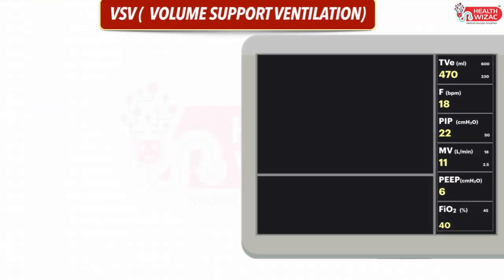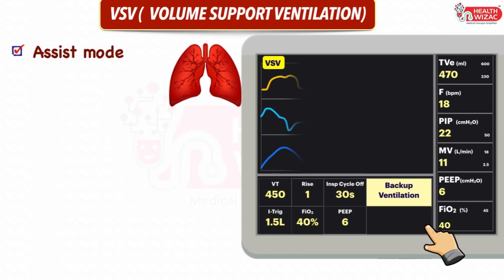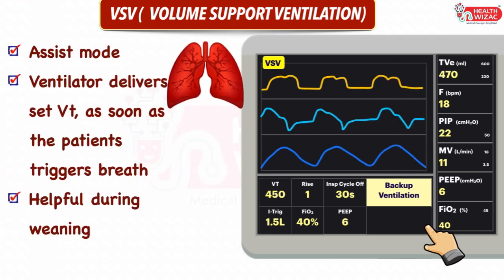Next is volume support ventilation. In this mode we have to set tidal volume, rise time, inspiratory trigger, FiO2, PEEP, inspiratory cycle off time, and backup ventilation settings. It is an assist mode of ventilation in which the ventilator delivers the set tidal volume as soon as the patient triggers breathing; however, if the patient fails to do so, the ventilator goes to backup ventilation. This mode is very helpful during the weaning process.